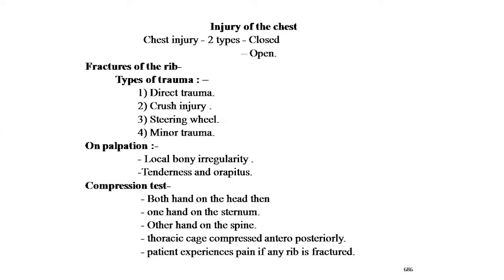There are two types of chest injuries: closed and open. In civil practice, chest injuries occur easily from road accidents, stab wounds, or gunshot wounds. Fracture of the ribs — types of trauma include direct trauma, crush injury, steering wheel injury, and minor trauma. Direct trauma occurs when the chest is struck against a hard object. Crush injury is often caused by road and aeroplane accidents. Steering wheel injury in head-on car accidents causes fracture or dislocation of the upper sternum and bilateral fractures. Minor trauma occurs when the ribs become rigid in elderly individuals.